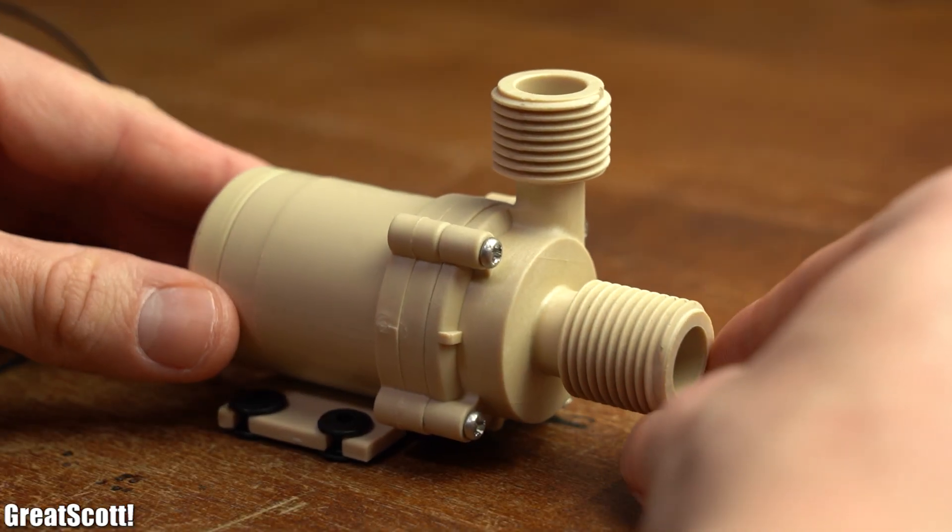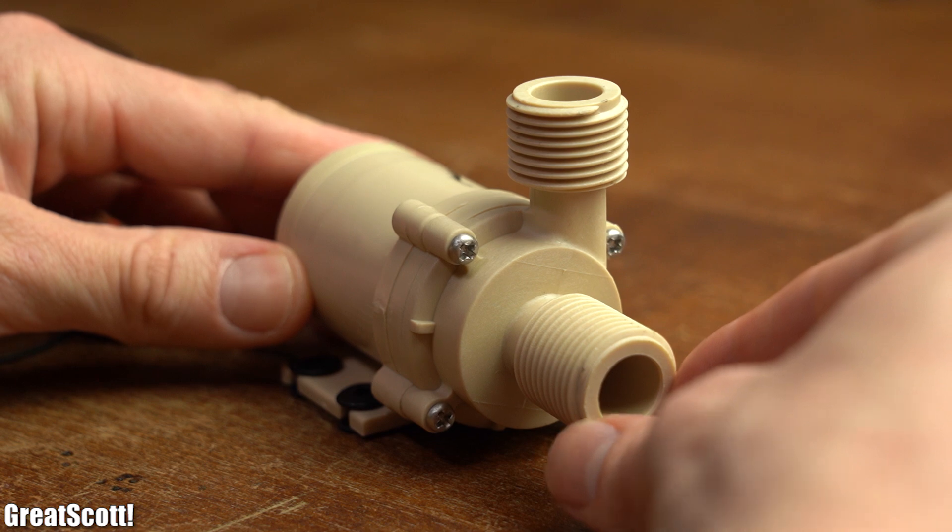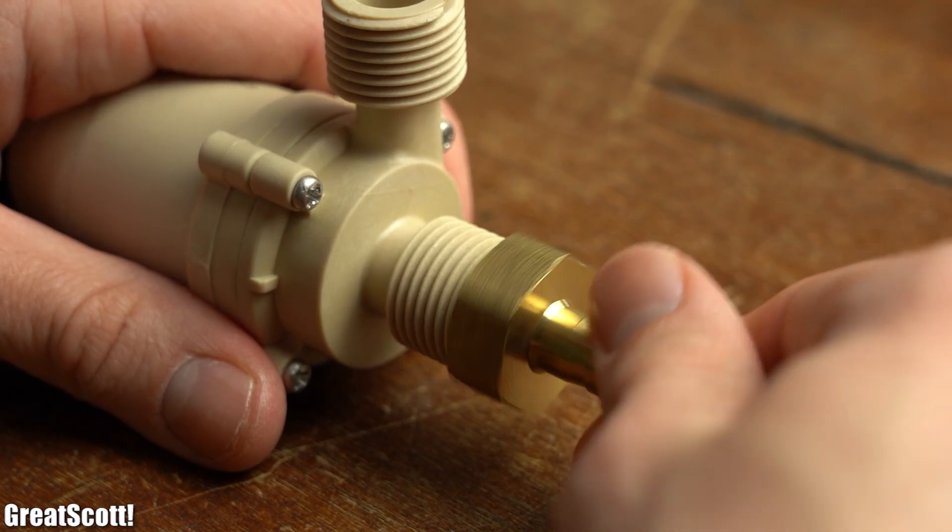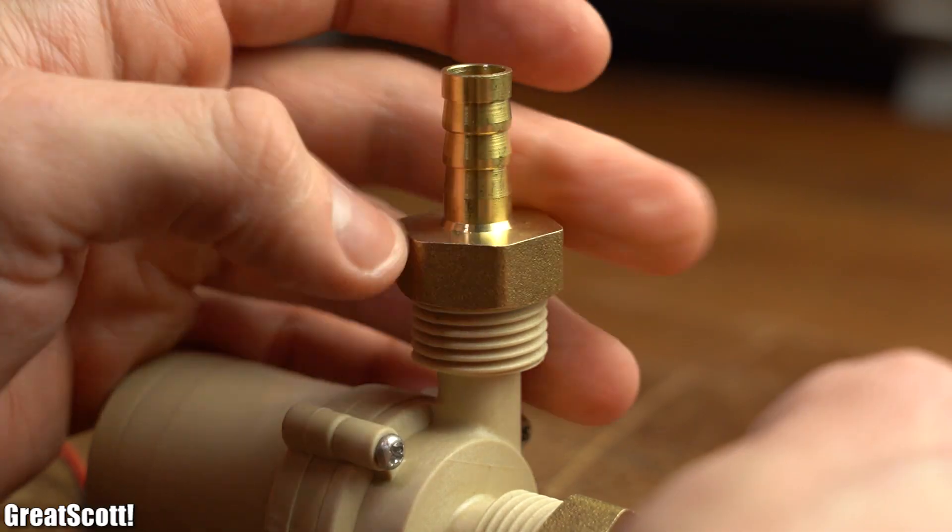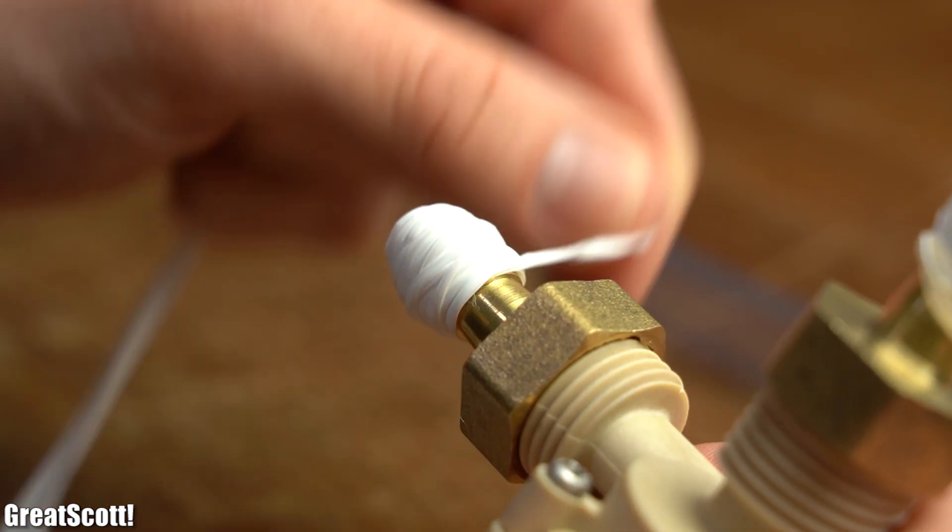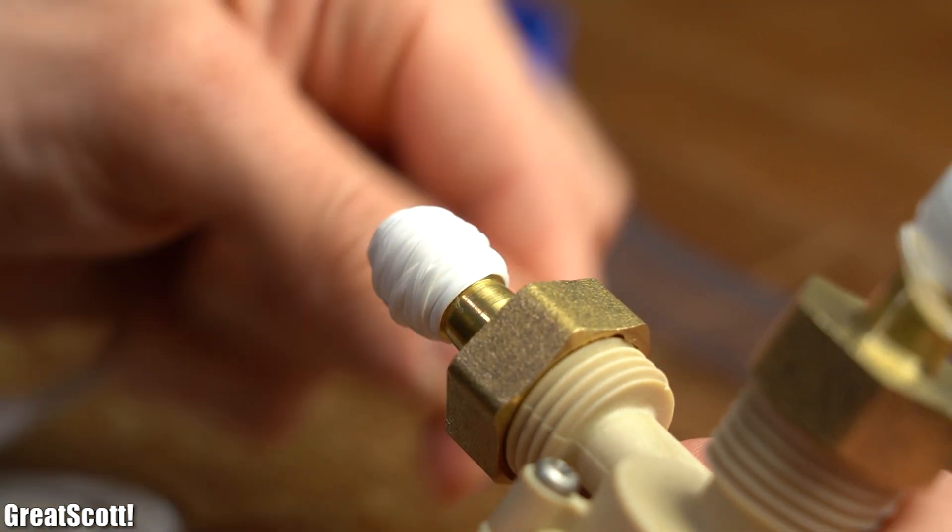First off, we need to understand how the small commercial water pump works in order to create a bigger replica. So I added adapters onto the two threads of the pump and then used some sealing tape in order to make everything watertight.